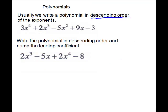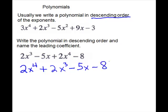Let's write the following polynomial in descending order and name the leading coefficient. We look for the highest exponent, which is a 4th. So 2x to the 4th should go first, and then we go down. So x to the 3rd — we have an x to the 3rd term, and we need to put the plus in between. We look for an x squared term, which we don't have. So we go on down: it will be minus 5x, and the last term is our constant, minus 8. We also need to name the leading coefficient. So once you are in descending order, it will be on your first term. Our leading coefficient is 2.